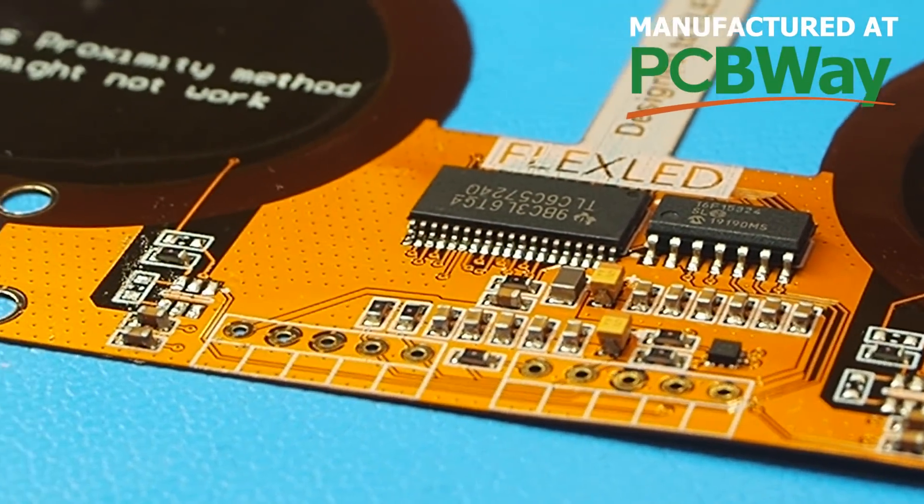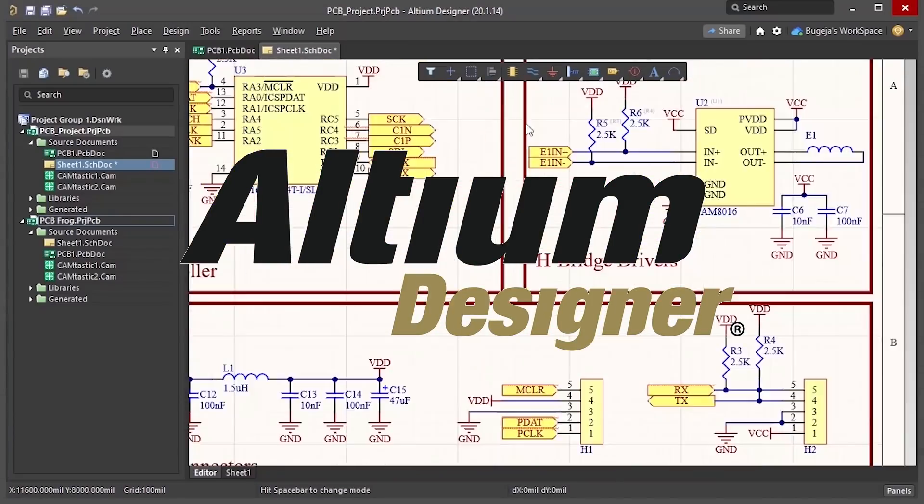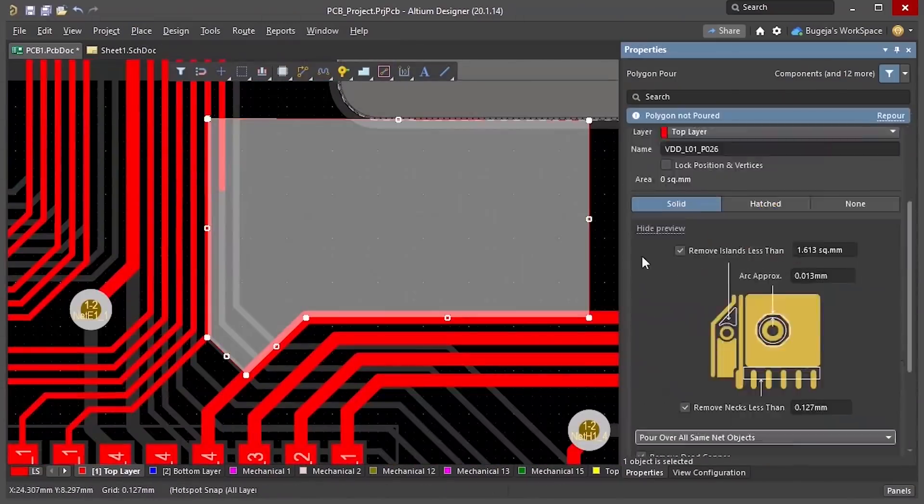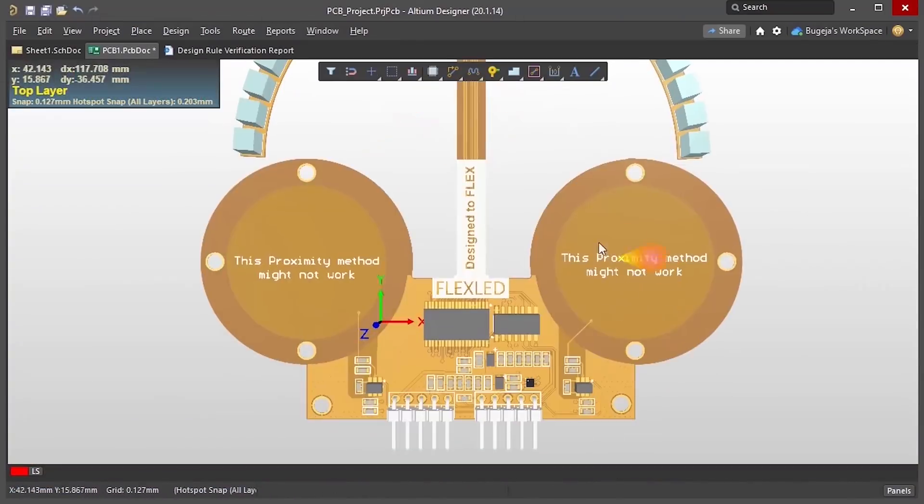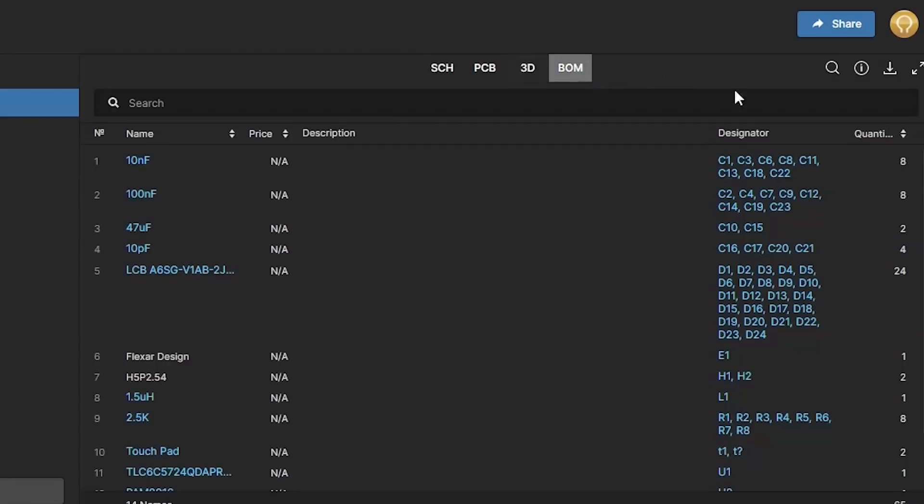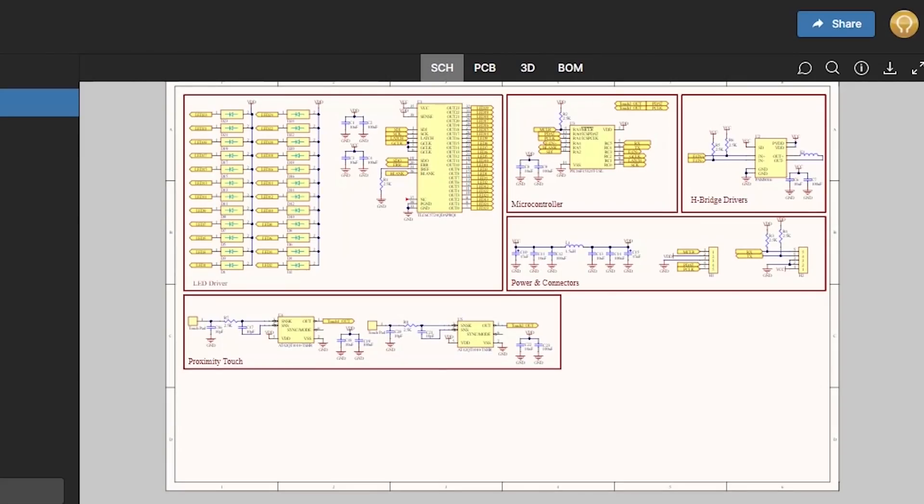Before I end this video I would like to thank PCBWay for sponsoring these PCBs and also Altium Designer. Altium is the software I use to design this flexible circuit. It combines schematic design, layout, and everything else you need in one connected platform to make circuit board design easier. Without their financial support I wouldn't be able to tackle projects like these, so if you'd like to support me please click the link below and you can get a free trial of Altium Designer and Altium 365. See you in the next one.